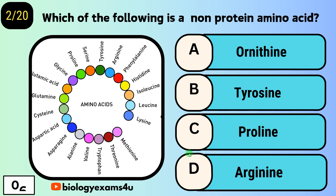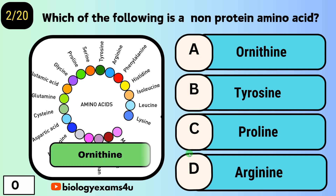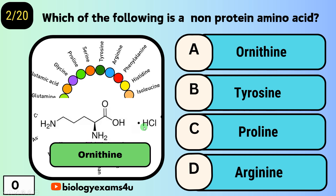Question number two: which of the following is a non-protein amino acid? Option A, ornithine; option B, tyrosine; option C, proline; option D, arginine. The answer is ornithine. This is a structure of ornithine, which is primarily involved in the urea cycle.